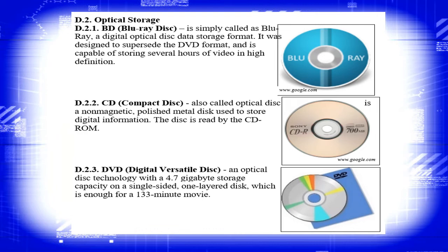For optical storage, first is the Blu-ray disk — a digital optical disk data storage format designed to supersede the DVD format, capable of storing several hours of video in high definition. We also have the compact disk (CD), a non-magnetic polished metal disk used to store digital information, read by a CD-ROM. The DVD, or digital versatile disk, is an optical disk technology with 4.7 gigabytes of storage capacity on a single-sided one-layer disk.